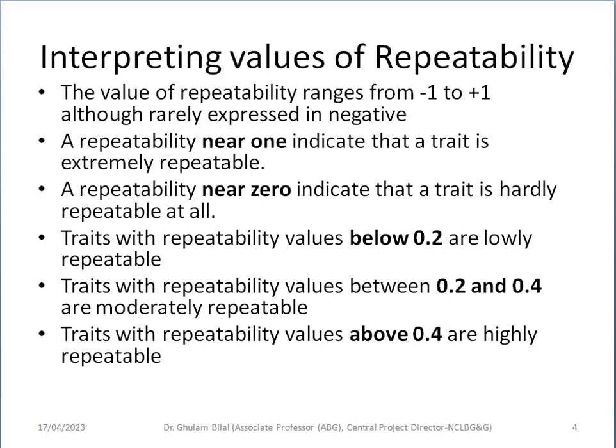How do we interpret repeatability values? Its range is ideally from minus 1 to plus 1, although we hardly get any negative value. A repeatability value near 0 indicates that the trait is hardly repeatable at all. Traits with repeatability values below 0.2 are lowly repeatable, between 0.2 and 0.4 are moderately repeatable, and above 0.4 are highly repeatable traits.